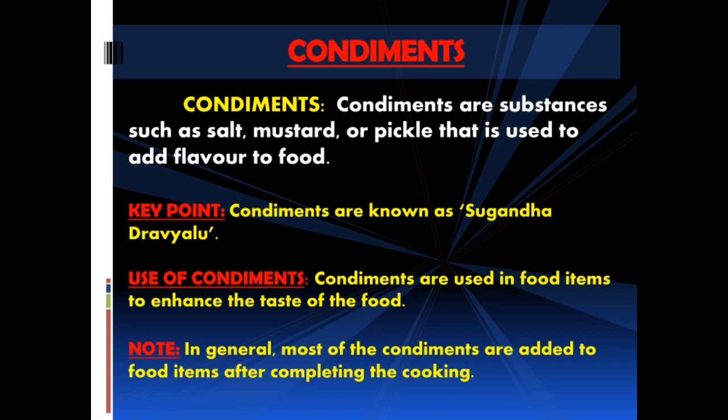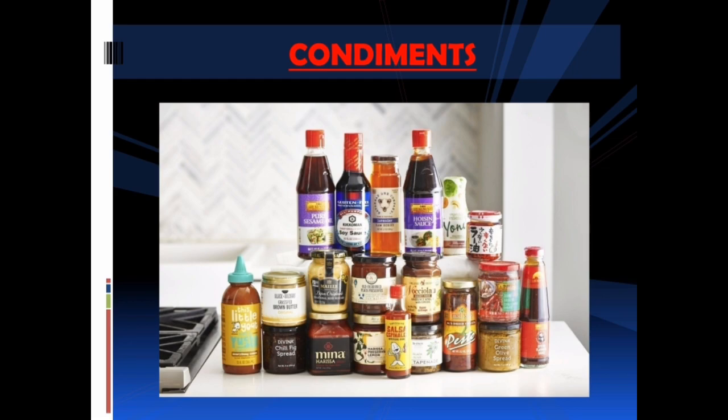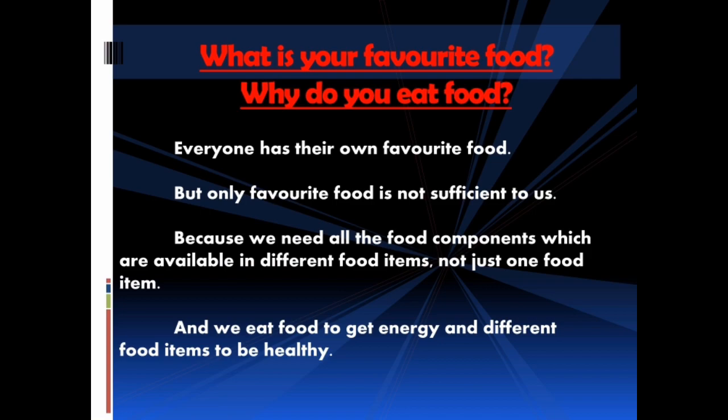Condiments are used in food items to enhance the taste, and in general most condiments are added to food items after completing the cooking. You can see 15 different types of condiments displayed on the screen. Not all of them are added to the food — based on the requirement, we add a few of them to make the food tasty.